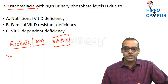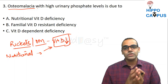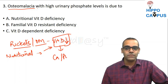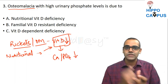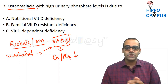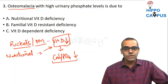In the nutritional type, there is deficiency of vitamin D in the diet. Vitamin D causes intestinal absorption of calcium and phosphorus. With reduced vitamin D, serum calcium and phosphate are both low. When calcium is low, it triggers a feedback mechanism increasing PTH.